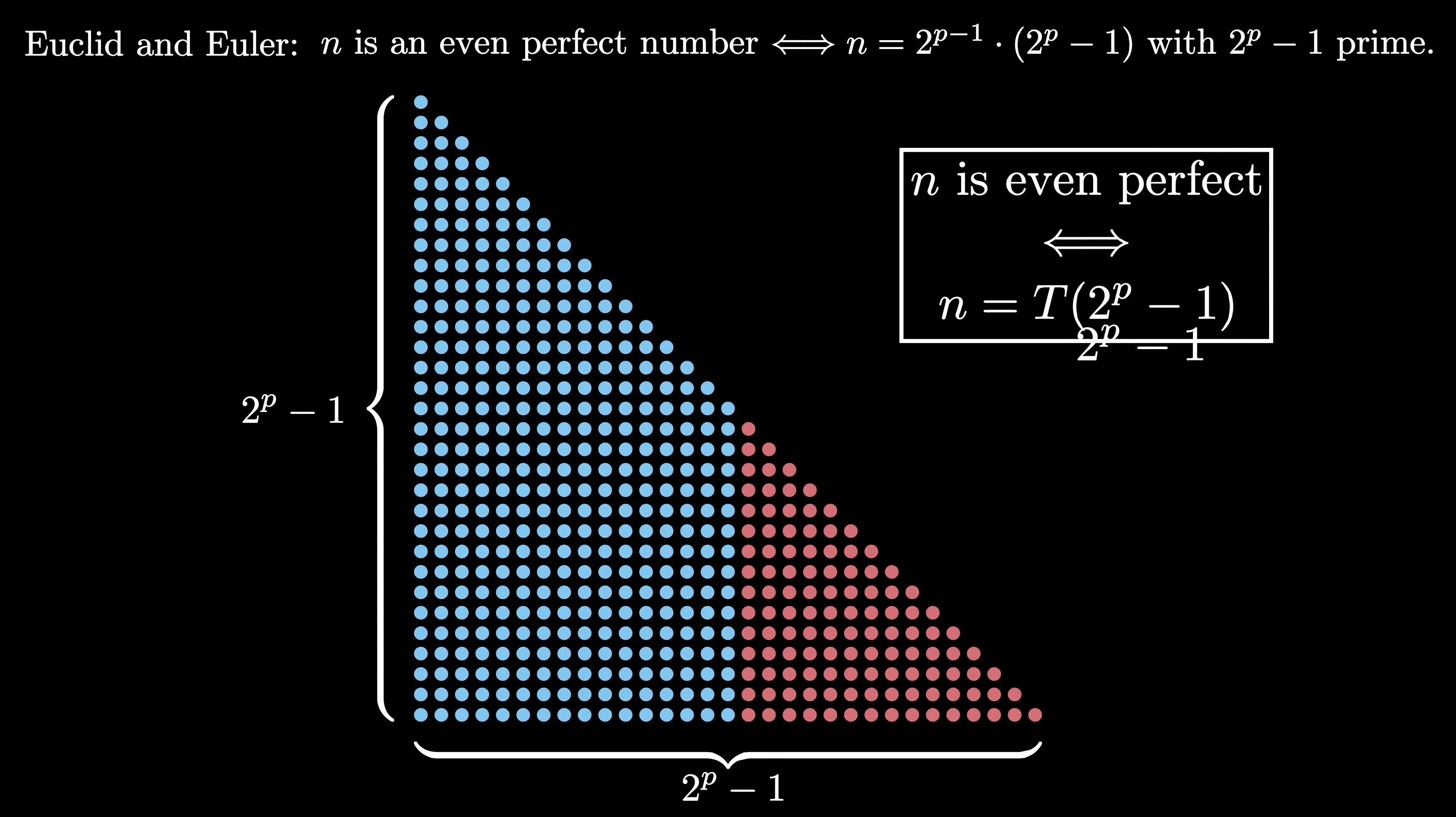It turns out that there aren't many primes of the form 2 to the p minus 1 that we know. These primes are called Mersenne primes, and it's an open problem to figure out if there are infinitely many such primes. Equivalently, it's an open problem to figure out if there are infinitely many even perfect numbers.